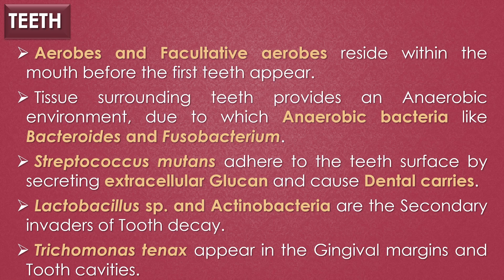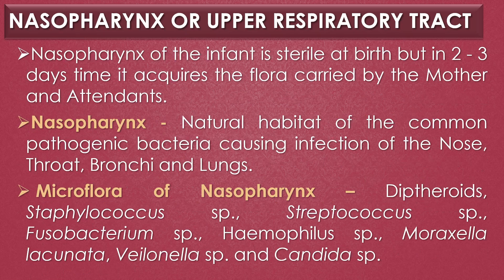Aerobes and facultative aerobes reside within the mouth before the first teeth appear, but the tissue surrounding teeth provides an anaerobic environment, due to which anaerobic bacteria like Bacteroides and Fusobacterium become more evident. Streptococcus mutans adheres to the tooth surface by secreting extracellular glucan and primarily causes dental caries. Lactobacillus species and Actinobacteria are secondary invaders of tooth decay. Trichomonas tenax, a flagellated protozoan, sometimes appears in the gingival margins and tooth cavities.